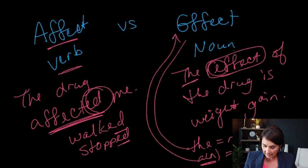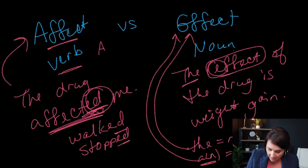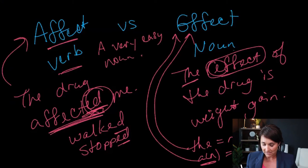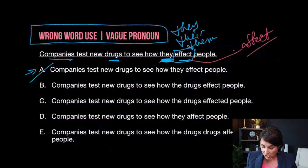Here's a little mnemonic to remember it: "A very easy noun." A is the verb, E is the noun. Say that to yourself — A is the verb, E is the noun. A very easy noun. In this case, the drug is doing something to somebody — it is affecting the people. How do they affect people?